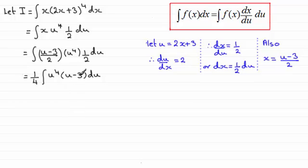And now I can expand this bracket. So therefore I've got a quarter times the integral of u to the power 5 minus 3u to the power 4. A couple of terms here so I need to put those in brackets, and then that's integrated all with respect to u. I've got standard integrals here now in these two terms. I can integrate those.